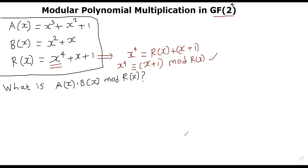Here is the idea, pretty similar to what we discussed earlier. We take polynomial a and look at the least significant bit. In this case, the least significant bit is set because it ends with 1. In bit pattern form, a(x) = x³ + x² + 1 has bits: third position set, second position set, first position not set, zeroth position set. We look at the LSB of a — it is set — so we take all the bits of b, meaning 1 × (x² + x) = x² + x.